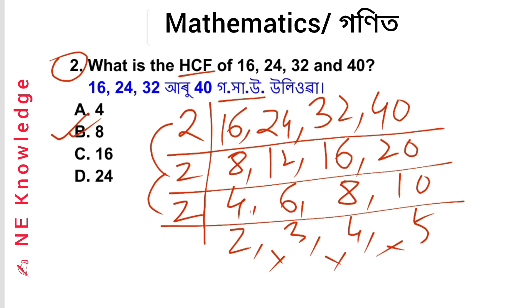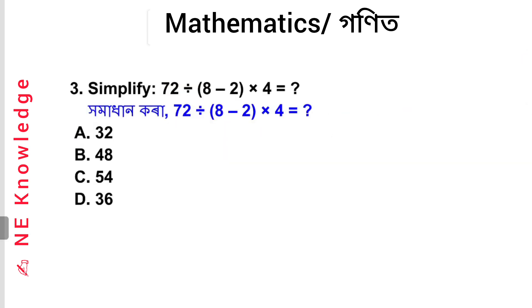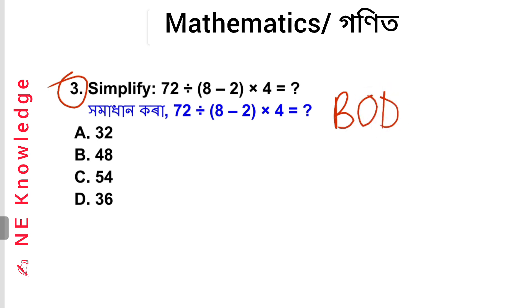Next question, number 3: Simplify 72/82. This is 2 × 4, 2 × 4. This is 3 × 4, 3 × 4.